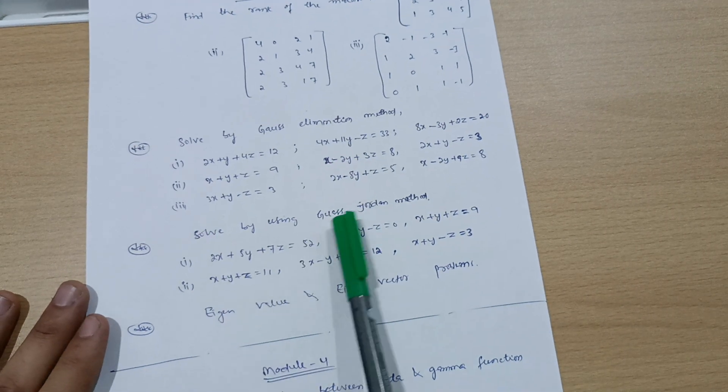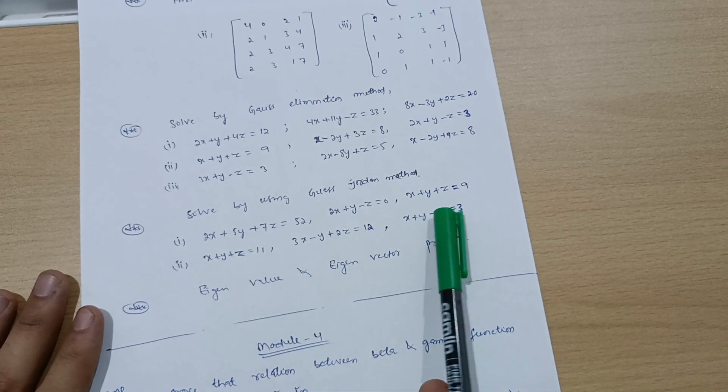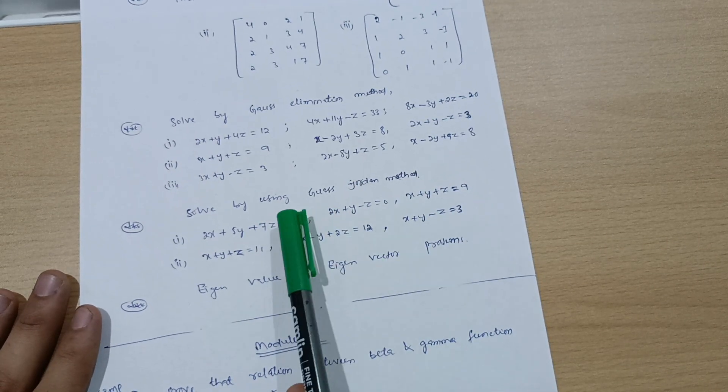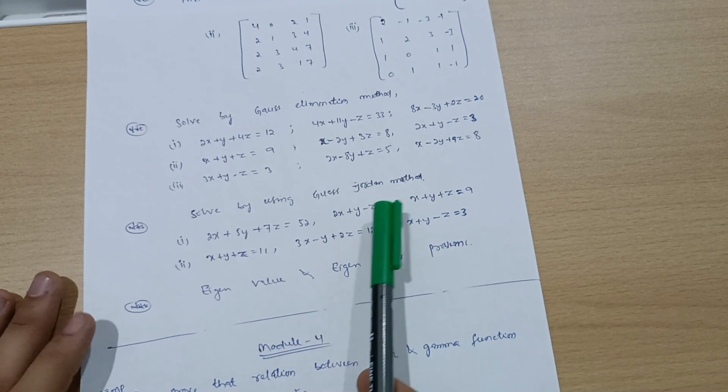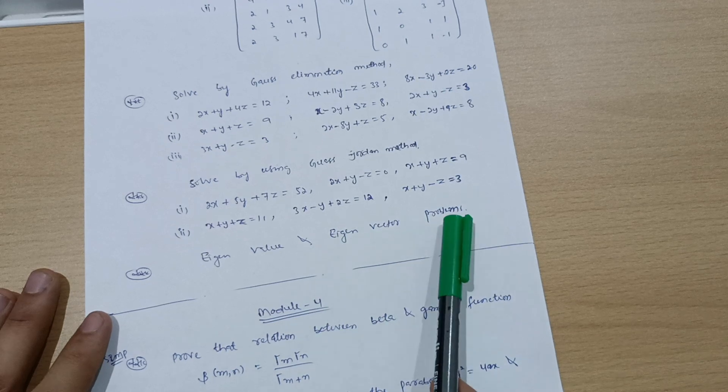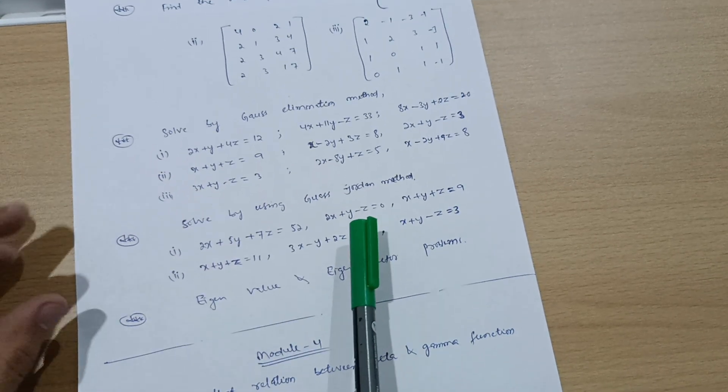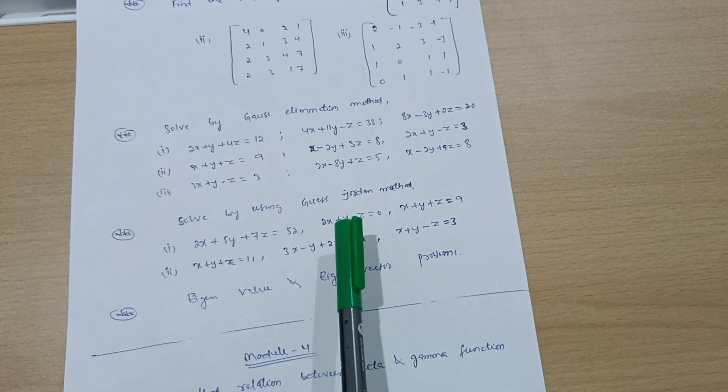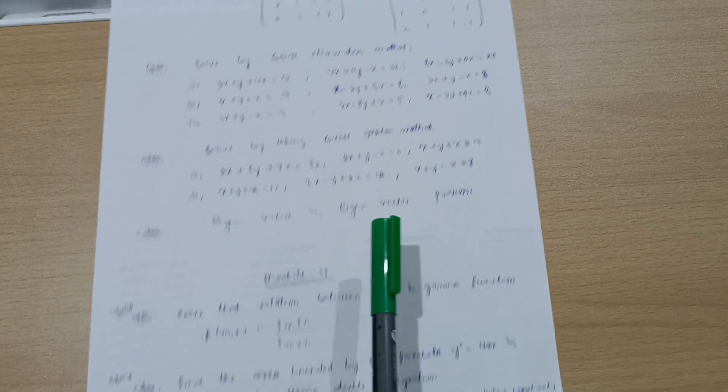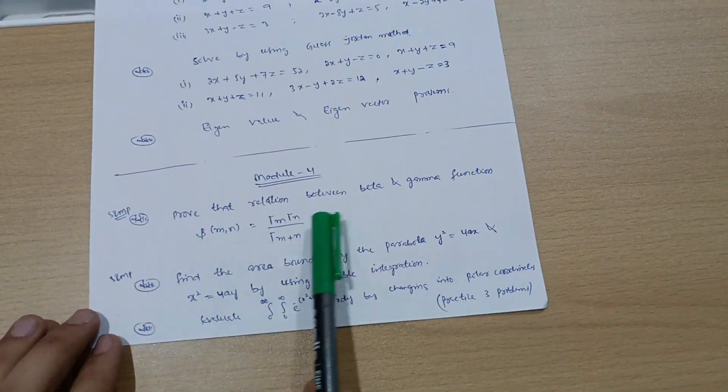Solve by using Gauss-Jordan method, equations will be like this one I have taken here. You can also take screenshots of these equations. Apart from these you should also practice another problems on eigenvalue and eigenvector problems. Surely you should go through these four topics so you can easily get 20 marks. This is the passing module, Module 4.